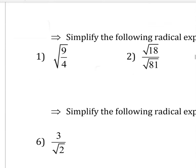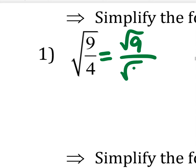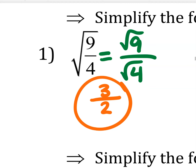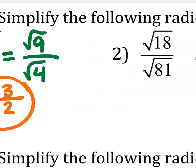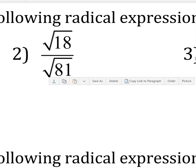Number one follows that first set of steps. There's one radical, and when I teach this in algebra one I have students split it up: square root of nine over square root of four. Nine is a perfect square — square root of nine is three — and square root of four is two. So the answer on number one is three over two. Short and sweet on that one.